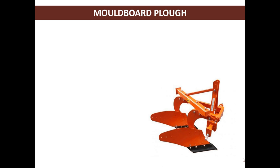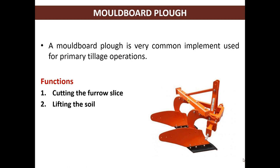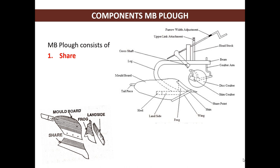MB plow - a moldboard plow is a very common implement used for primary tillage operation. Functions of the MB plow are: cutting the furrow slice, lifting the soil, turning the furrow slice, and pulverizing the soil. Components of MB plow consist of shear, MB (that is moldboard), land side, frog, and tailpiece.